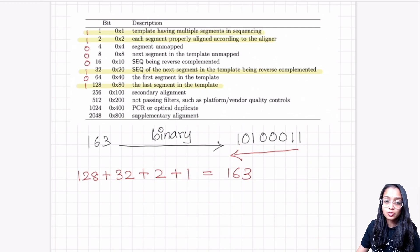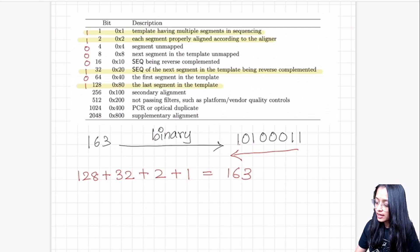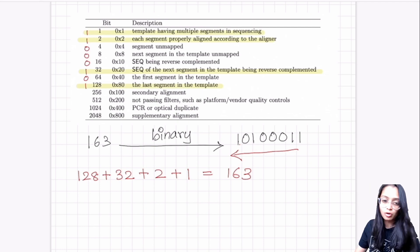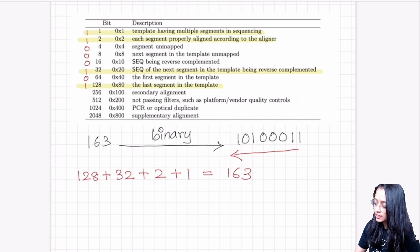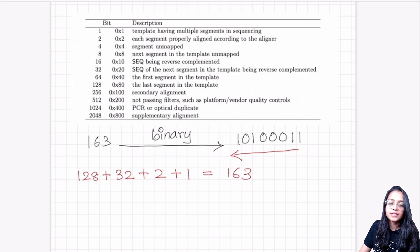Now I highlight all rows that correspond to a 1. If you add 128 + 32 + 2 + 1, you get 163. So these are the flags associated with the read: flag 1 tells us the template has multiple segments — it's a paired read; flag 2 tells us each segment is properly aligned — read mapped in proper pair; flag 32 tells us the next segment is reverse complemented; and flag 128 tells us this is the last segment in the template — the second read in the pair.